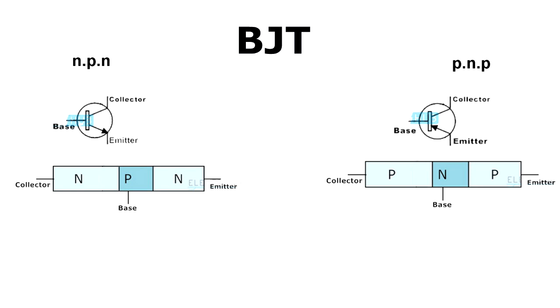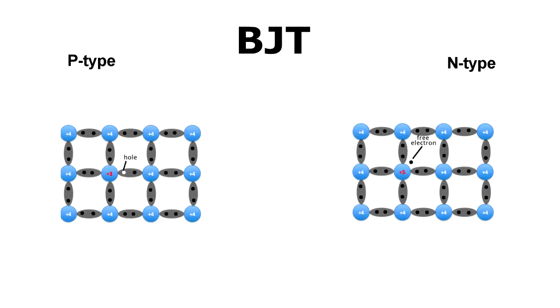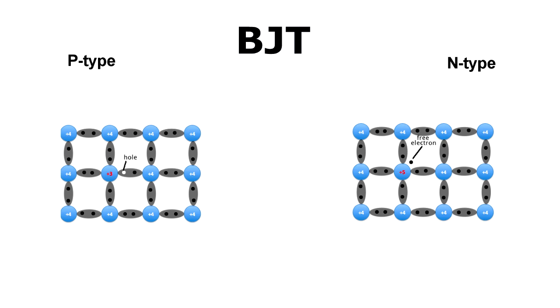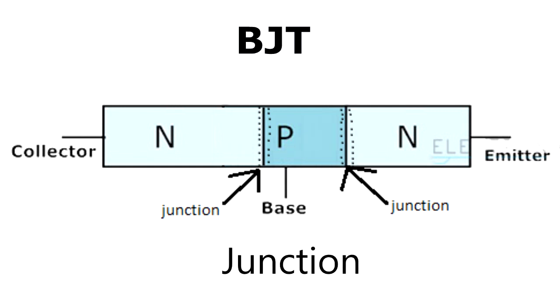After talking about the physical structure and N-type and P-type semiconductor materials, now we can talk about where that name comes from. The transistor is made of N-type and P-type material. The P-type has more holes than electrons, and holes are positively charged. On the other hand, the N-type material has more electrons than holes, and electrons are negatively charged. That means we have two types of polarities — that's why we call it bipolar.